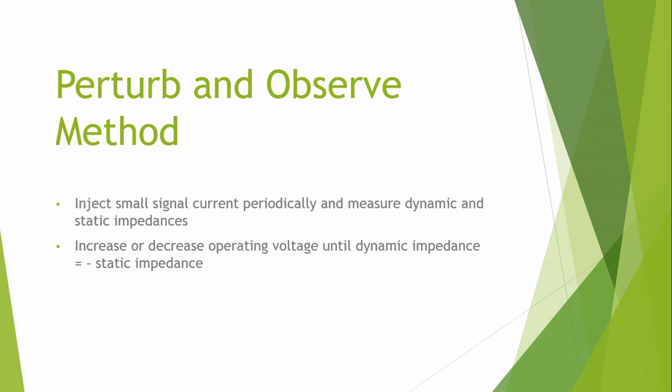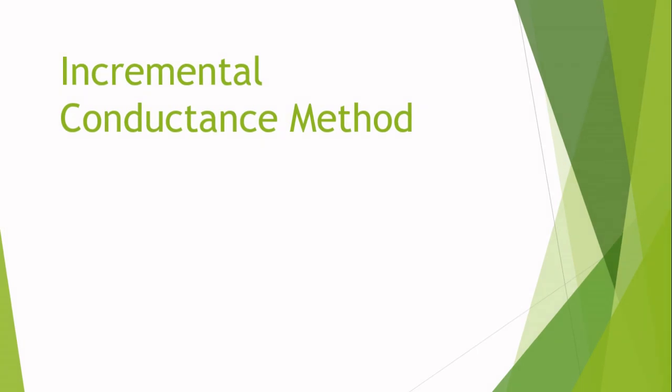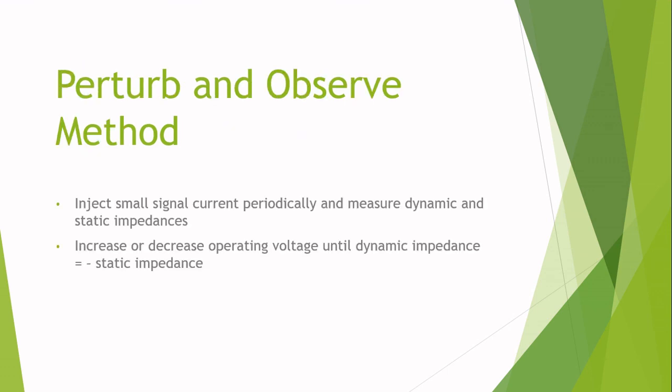In all cases we need to ensure that for maximum power point tracking or for ensuring maximum efficiency, the static and dynamic impedances should be the same. The next is the incremental conductance method. In the incremental conductance method, the controller measures the incremental changes in the photovoltaic array current and voltage to predict the effect of the change in voltage. The method requires more computation in the controller part but can track changing conditions more rapidly compared to the perturb and observe method.